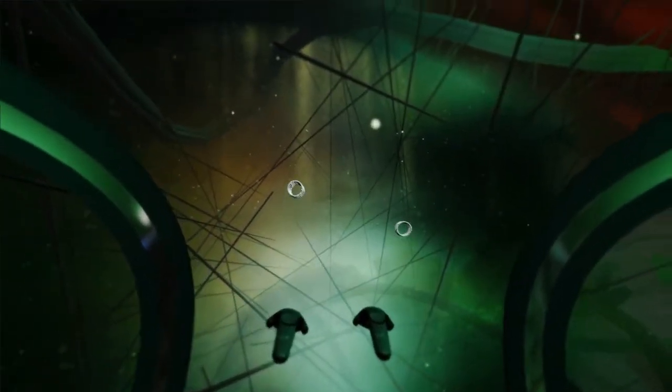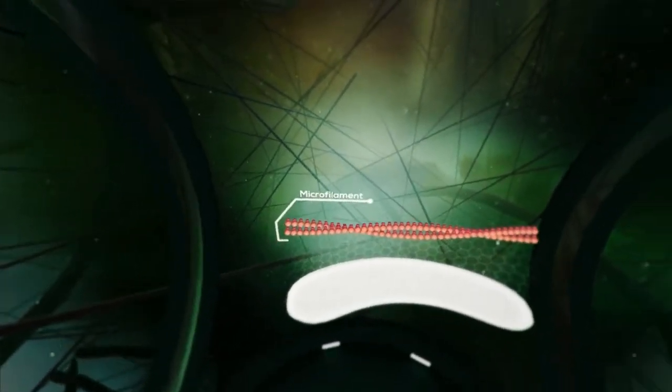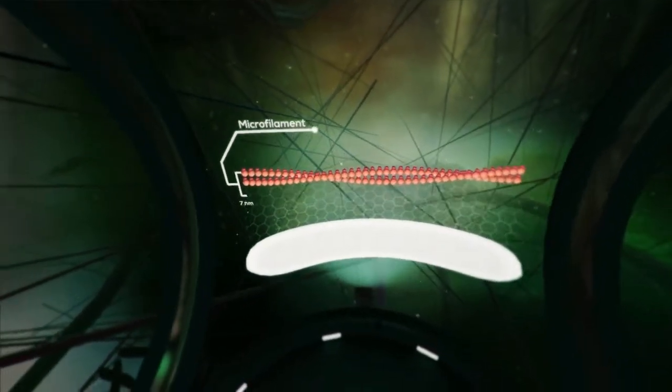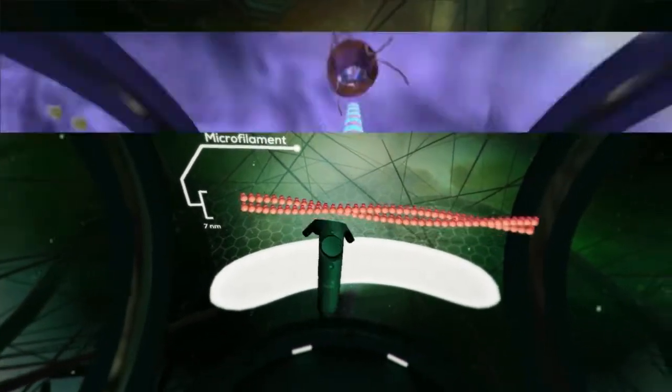There are three different types of strands that make up the cytoskeleton. Microfilaments are the thinnest strand, measuring only 7 nanometers in diameter.